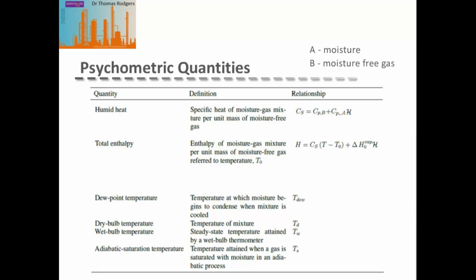The total enthalpy is the enthalpy of the moisture-gas mixture per unit mass of moisture-free gas from a reference temperature T₀. It equals the humid heat multiplied by the temperature rise from the standard temperature, plus the heat of vaporization for the moisture multiplied by the humidity.